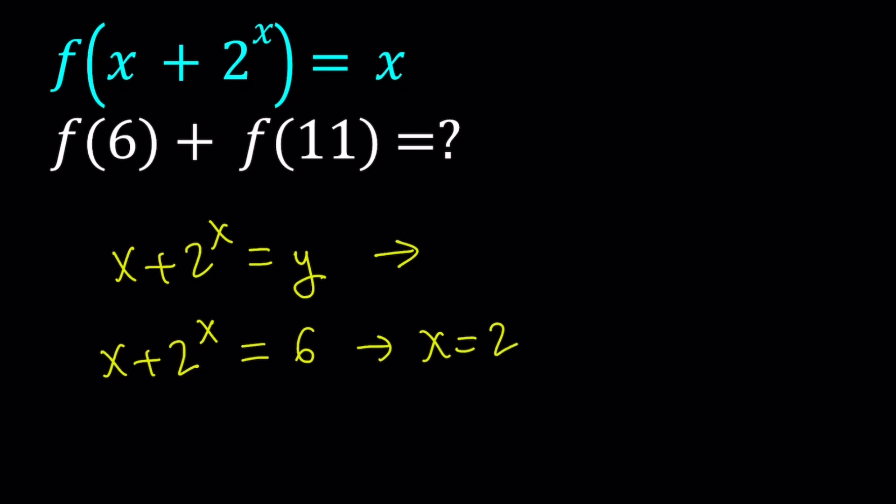Is there any other x value for which this is true? Then we're going to run into a problem, because then f(6) is going to have two different values, and that is not going to be a function. So it should have a single solution. But how do we verify that?